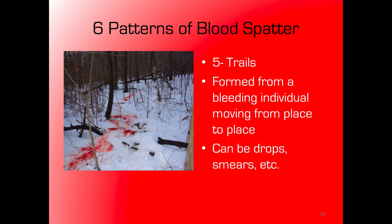Fifth are trails. A trail could be a hodgepodge of many different patterns — basically it just shows long movement from place to place, and could be a combination of the other five pattern types. For example, looking at a picture of a deer shot in the woods, a hunter can track the deer by following the trail of blood. We'll get more into trails in the third lecture.